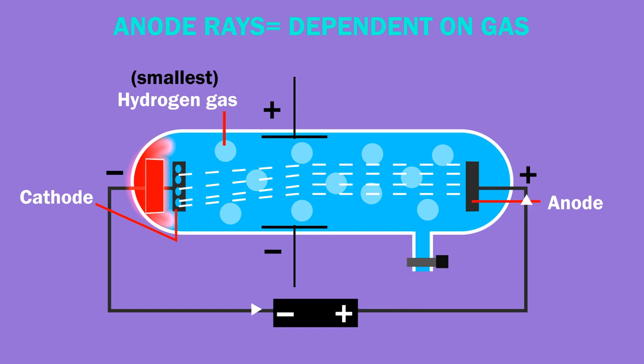Unlike cathode rays, anode rays were dependent on the type of gas filled in the discharge tube.